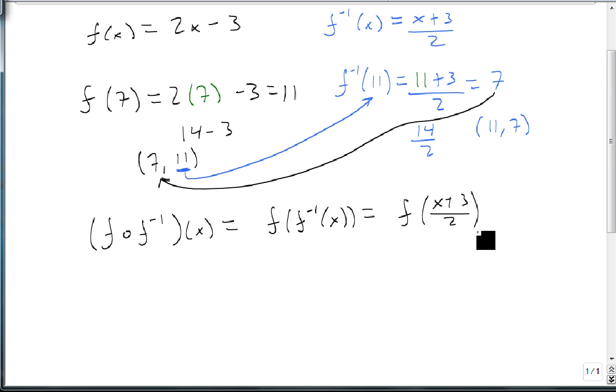So we get f of x plus 3 over 2, which is 2 times x plus 3 over 2 minus 3.